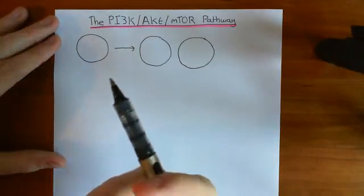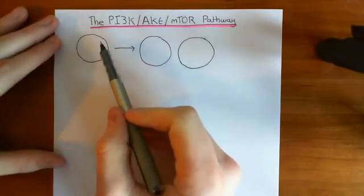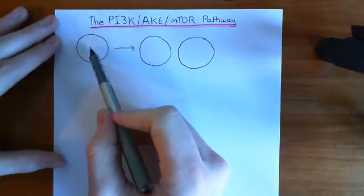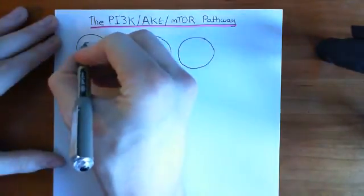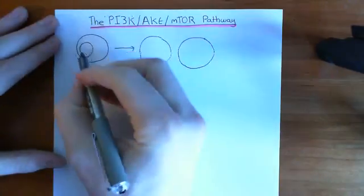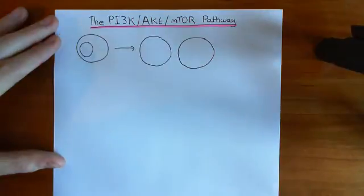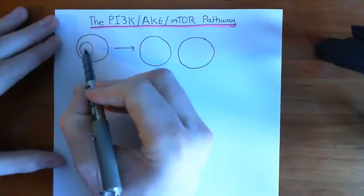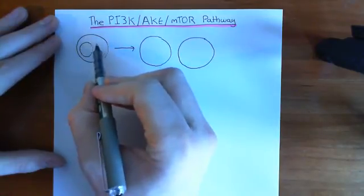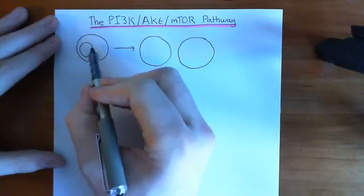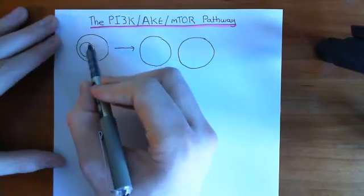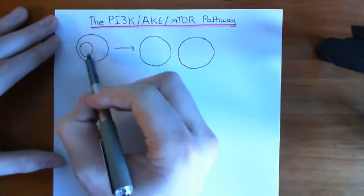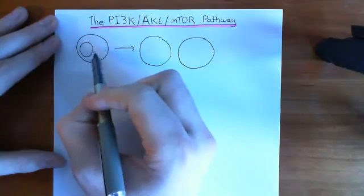The RAS-RAF-MEK-ERK pathway is going to be activated by receptor tyrosine kinases and overall what it's going to result in is changes at the level of the genes — epigenetic rather than genetic changes. It's going to change the expression of genes so that we can start producing more proteins. If you want to produce more proteins, you need to firstly transcribe the genes into mRNA. The RAS-RAF-MEK-ERK pathway is going to produce that change in gene expression so that we can produce more mRNA.